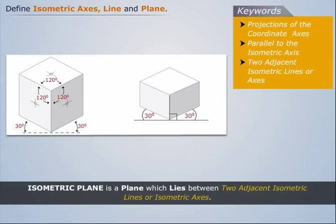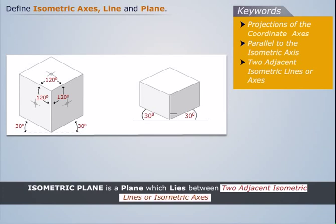Any plane which lies between two adjacent isometric lines or isometric axes is called isometric plane. It is the boundary line.